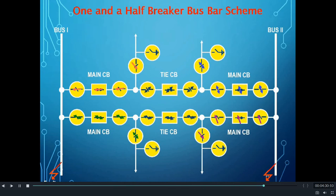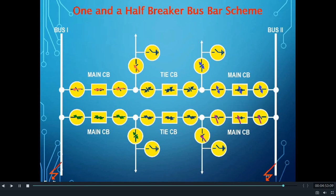If you refer to my earlier videos on the double main cum transfer as well as double main and transfer busbar schemes, a fault in both buses together will obviously interrupt the whole system. Hence, the one and a half breaker scheme is more advantageous over those schemes, but at the cost of one additional circuit breaker for each pair of feeders.